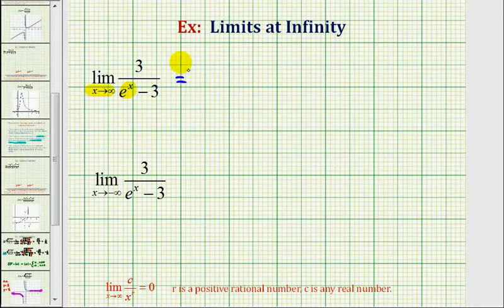So as x approaches infinity, the numerator stays at three but the denominator increases without bound. Any fraction where the numerator is fixed and the denominator increases without bound is always going to approach zero, and therefore this limit is equal to zero.